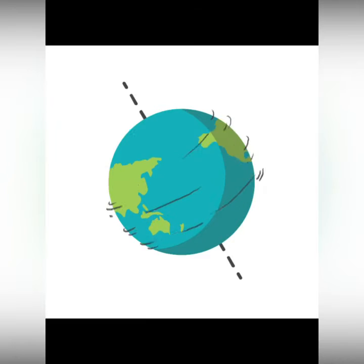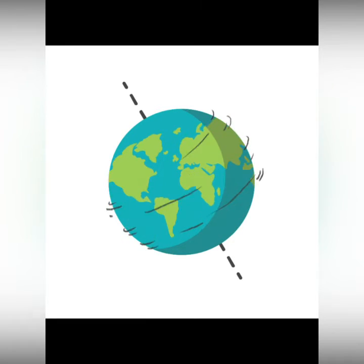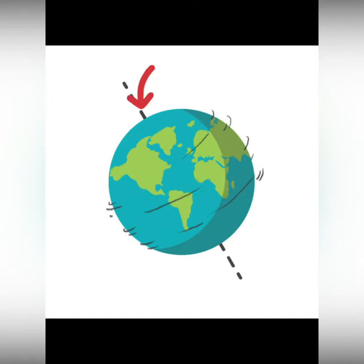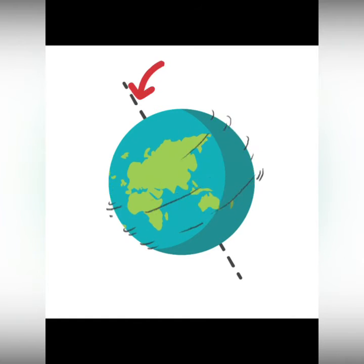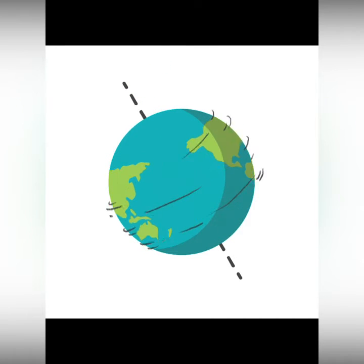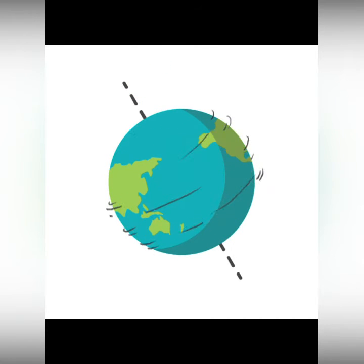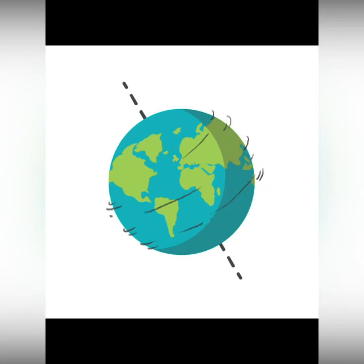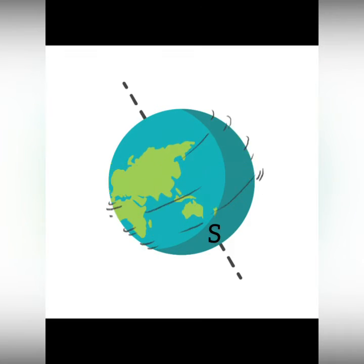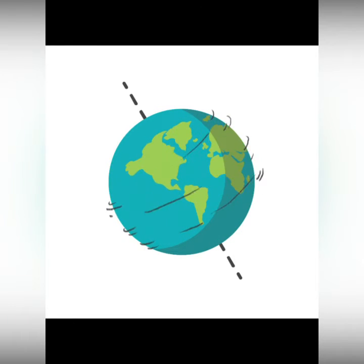That's why we need certain points of reference just to find out the location of places. You will notice that a needle is fixed through the globe in a tilted manner, which is called its axis. The two points on the globe through which the needle passes are the two poles — the north pole and the south pole.